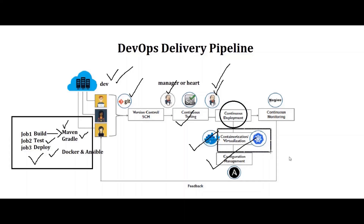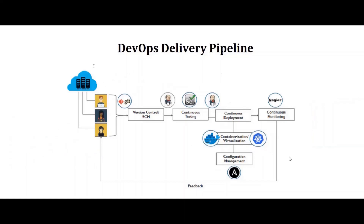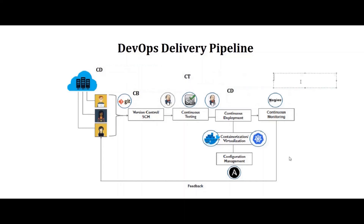Then comes containerization — a lightweight alternative to heavy virtual machines, which involves encapsulating the application in a container. Next is configuration management, which is a process for maintaining computer systems and servers in a desired and consistent state. And at the end, we have continuous monitoring — an automated process by which we can detect compliance issues and security threats during each phase of the DevOps pipeline, using monitoring tools like Prometheus and Azure. So in the DevOps delivery pipeline, we have continuous delivery, continuous builds, continuous testing, continuous deployment, and continuous monitoring. I hope you guys have enjoyed watching this tutorial. Thank you so much for watching.